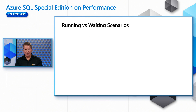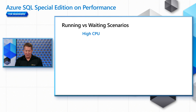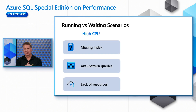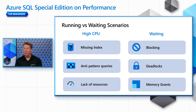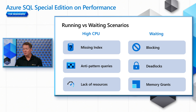We decided to build this series based on scenarios. There are all sorts of different types of scenarios for performance problems that are running or waiting, but we've identified six of them. For high CPU problems, we commonly see customers struggling with performance problems that are running based on missing indexes, or something called an anti-pattern query, or something called lack of resources. On the waiting side, we see problems commonly called blocking problems or deadlocks, or waiting based on a concept called a memory grant. In the next episodes, we'll focus on each of these areas one at a time.